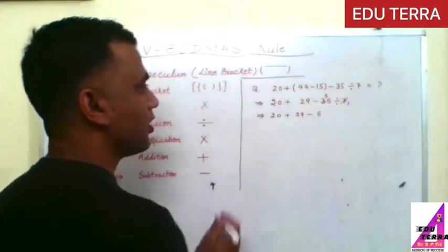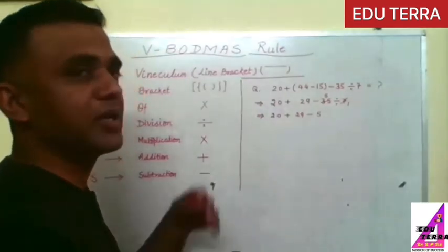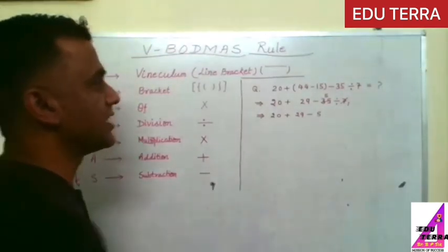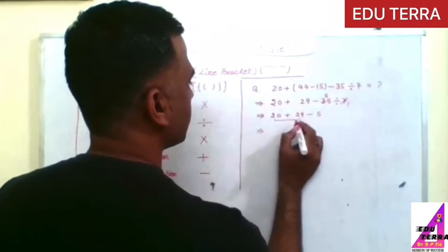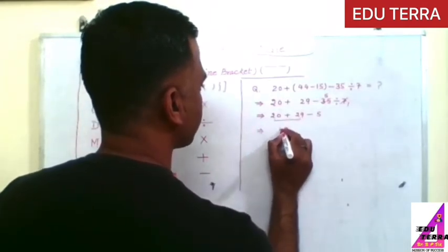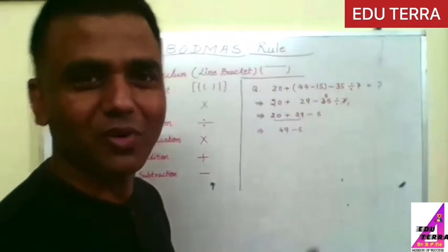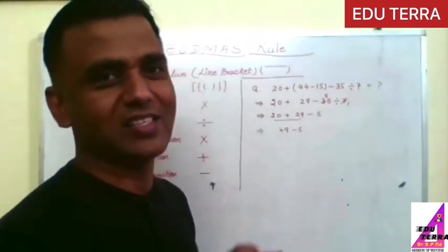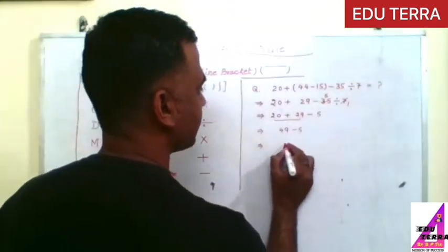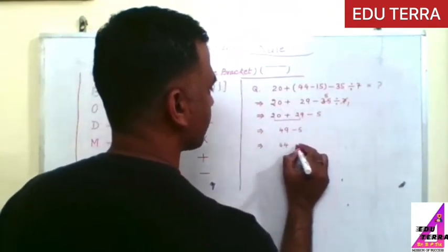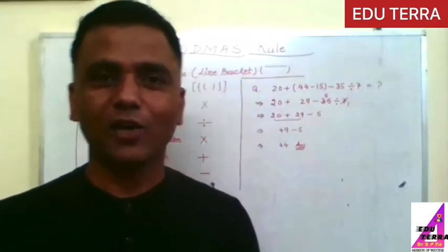Now after division, multiplication. There is no any multiplication number otherwise multiplication sign. After that, addition. So addition means you have to add these two. This equals to 49 minus 5. Now in the last, subtract 5 from 49 and definitely you will get your correct answer. This is 49 minus 5, so 44 is our answer.